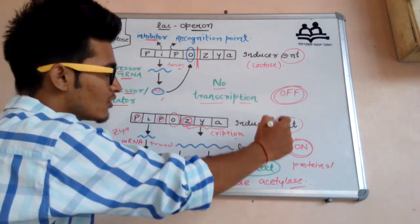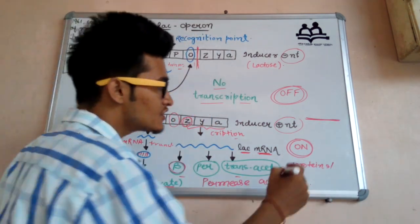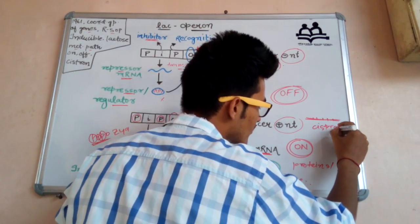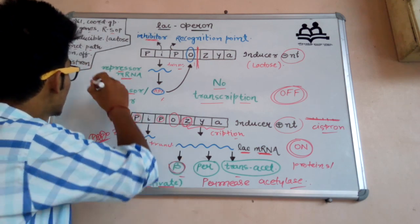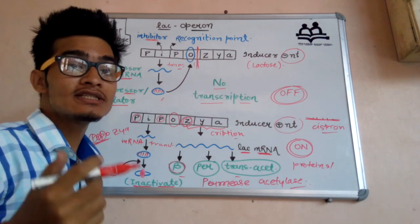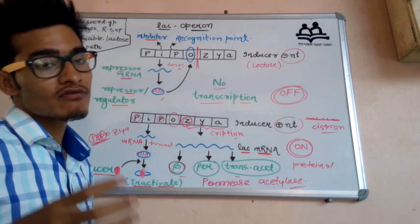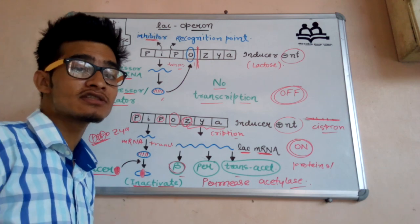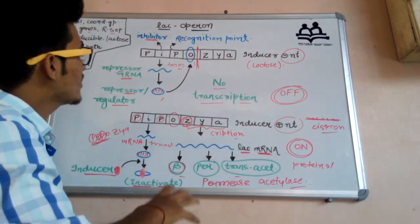In the OFF state, the regulator protein binds to the operator gene, blocking the pathway so RNA polymerase cannot move forward. Now, in an mRNA, different functional genes are known as cistrons. Since this operon has more than one gene forming different proteins and enzymes, this particular operon is known as a polycistronic system — 'mono' means one cistron, 'poly' means more than one cistron is present.